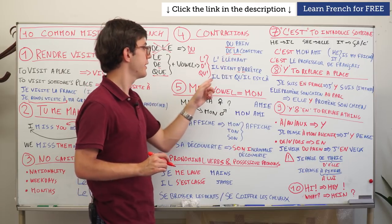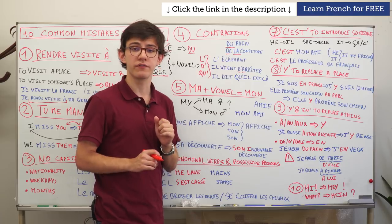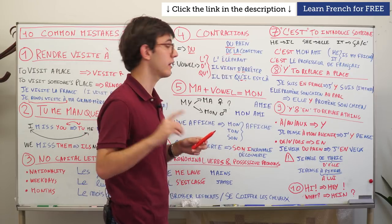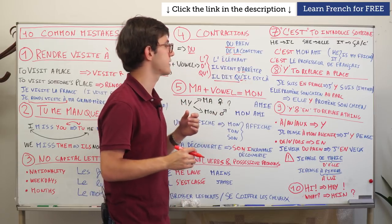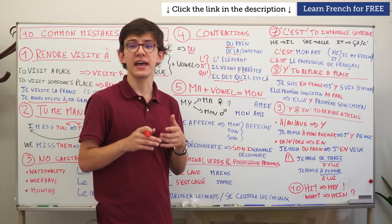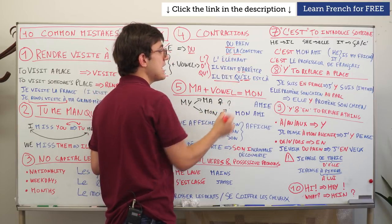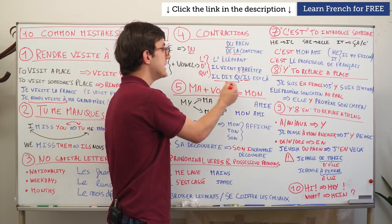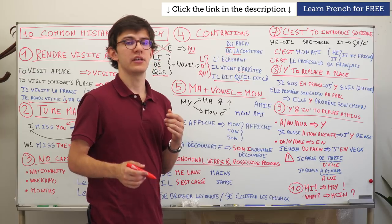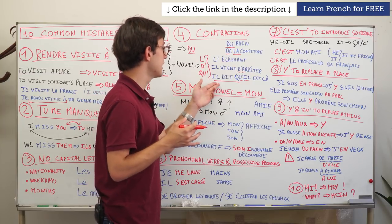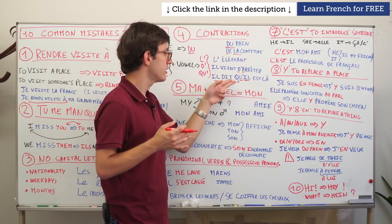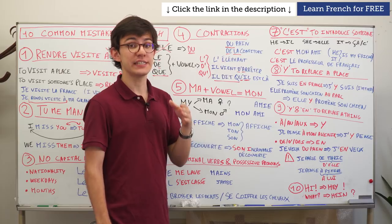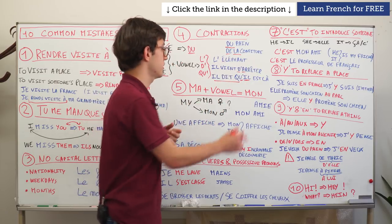The 'que' contraction is often forgotten. When 'que' is followed by 'il' or 'elle' (which start with vowels), you must contract. So 'il dit que il est là' is wrong — you must say 'il dit qu'il est là' (he said that he is here). Same with elle: 'il dit qu'elle est là.' Don't forget this — it's quite important.